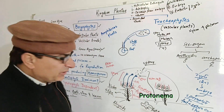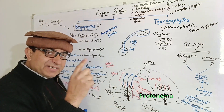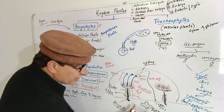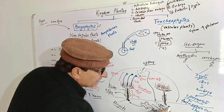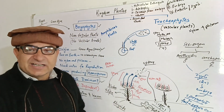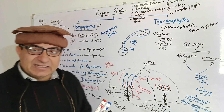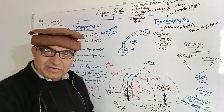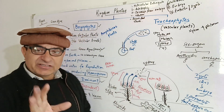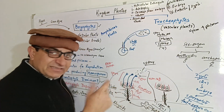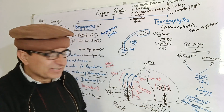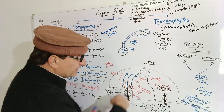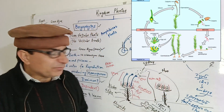This protonema structure will develop into a new gametophyte generation, which has root-like, stem-like, and thallus-like structures.